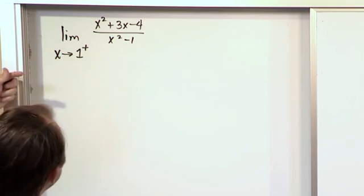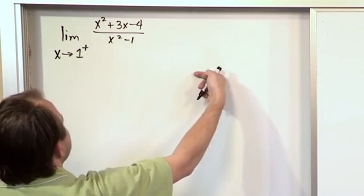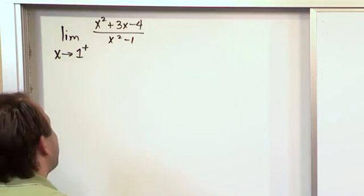When you're taking one-sided limits, you need to mentally be telling yourself, in this case we're coming from the right, so you need to be mentally telling yourself that you're coming from the right.